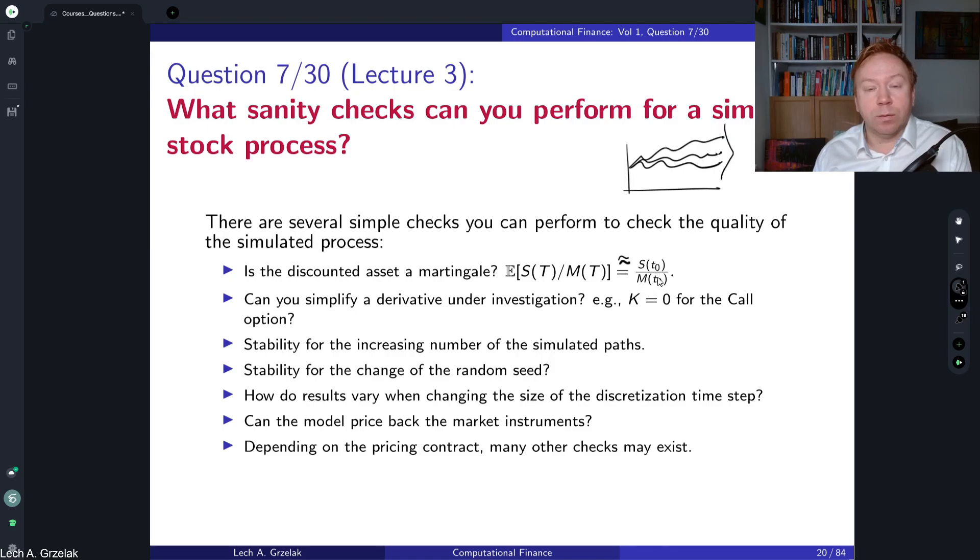This difference, however, should be decreasing once you simulate more paths or you have decreased the size of your simulated grid. So this difference is something that you should monitor and check whether your simulation improves if you increase number of paths and decrease the discretization step.